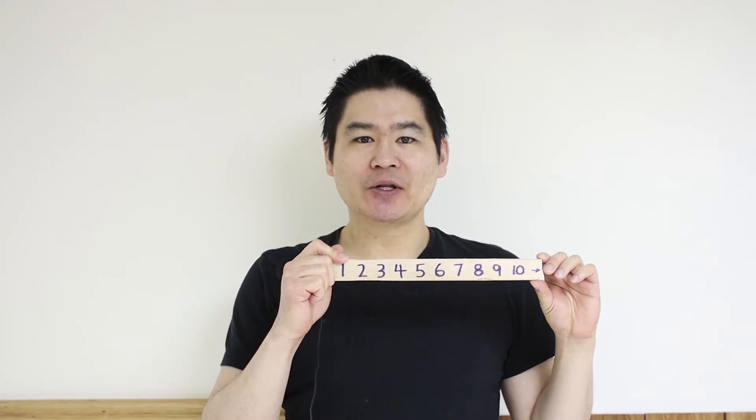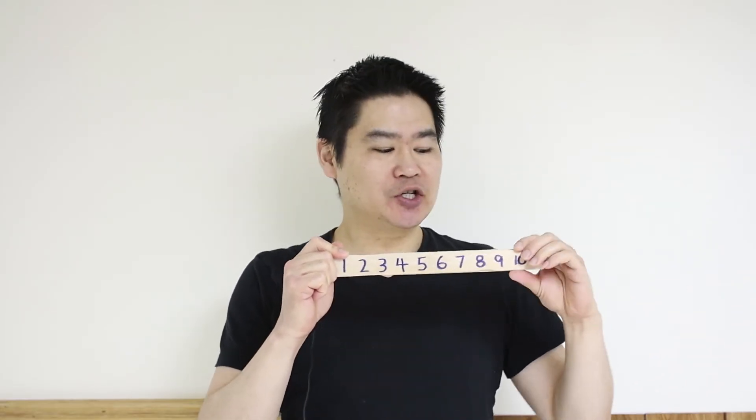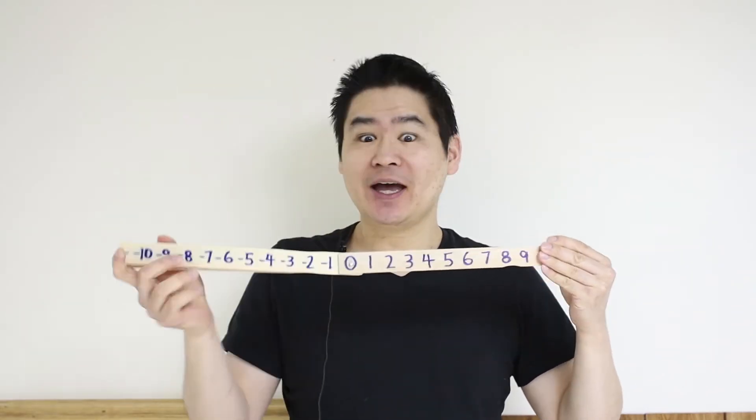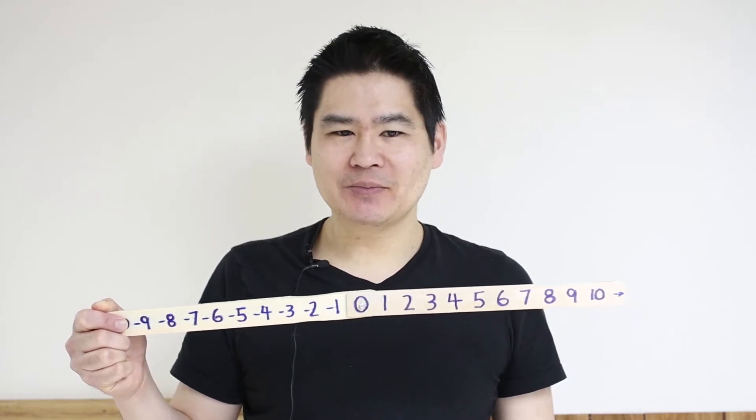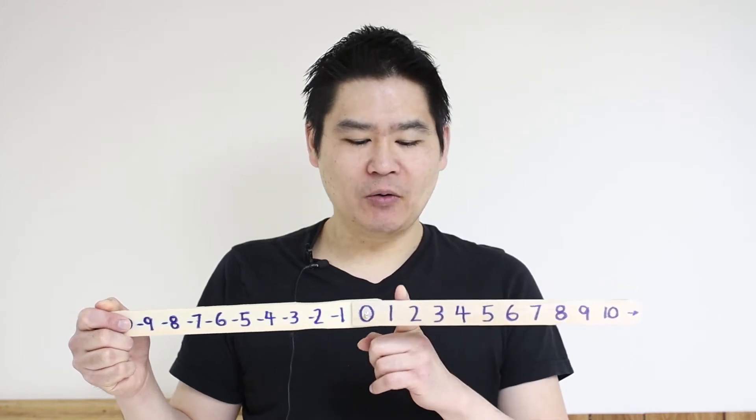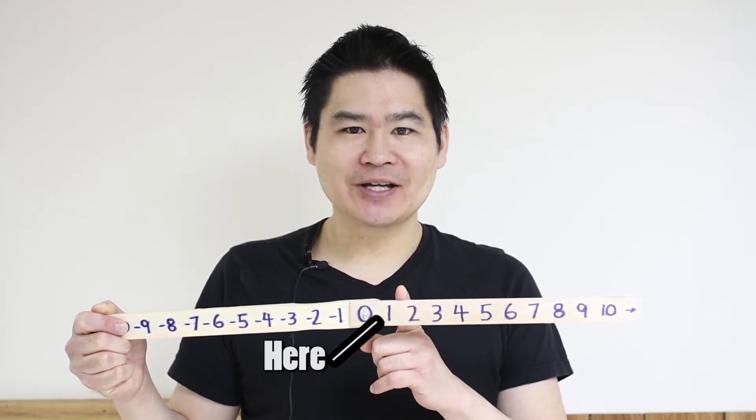Fast forward to junior high, and we learned that this number line doesn't point in one direction. It points in the other direction as well. This is known as the set of integers. We also learned that you can have values that fall in between numbers, such as 3.5 or 2 thirds. These are known as rational numbers.